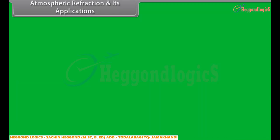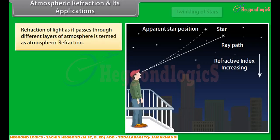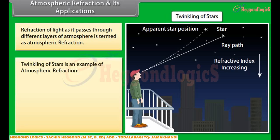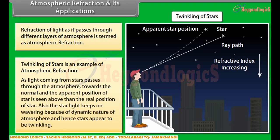Atmospheric refraction and its applications: our atmosphere is not uniformly dense. Depending on local conditions, it may have hot and cool air near the ground. Hot air is lighter than cooler air and hence has a lesser refractive index. Due to this, starlight or sunlight entering the atmosphere undergoes refraction, known as atmospheric refraction. As light from stars passes through the atmosphere, it bends towards the normal and the apparent position of the star is seen above its real position. Also, starlight keeps wavering due to the dynamic nature of the atmosphere, and hence stars appear to be twinkling.